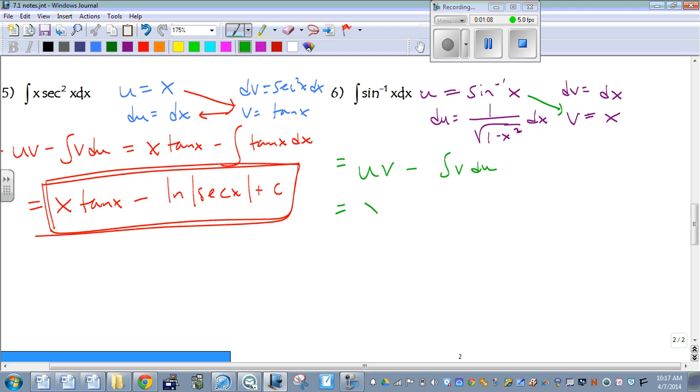So that gives us x times inverse sine of x minus the antiderivative of x over square root of 1 minus x squared dx.